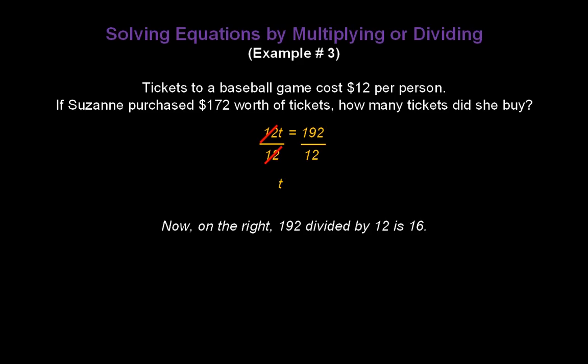Now on the right, 192 divided by 12 turns out to be 16. So t is going to equal 16. But that's not our final answer, because this is a word problem. Our answer needs to be written in words. So we're going to say, Suzanne purchased 16 tickets.